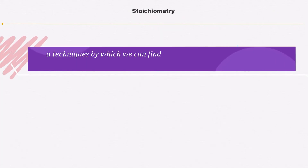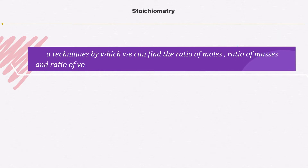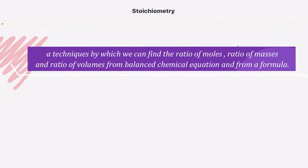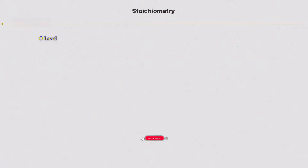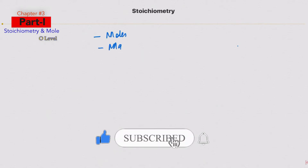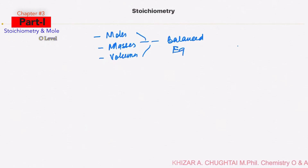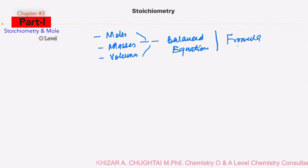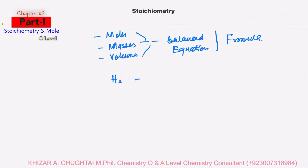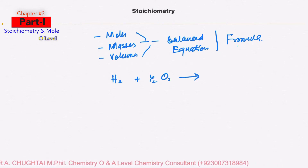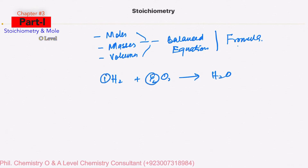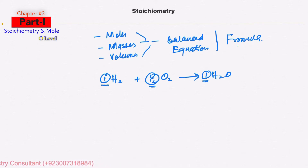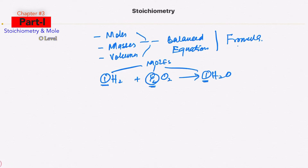A technique by which we can find the ratio of moles, ratio of masses, and ratio of volumes from a balanced chemical equation and from a formula is known as stoichiometry. For example, when hydrogen is allowed to react with oxygen to make water H₂O, one mole of hydrogen reacts with half a mole of oxygen to give one mole of H₂O. The coefficients 1, ½, and 1 are basically the moles.